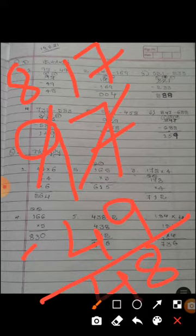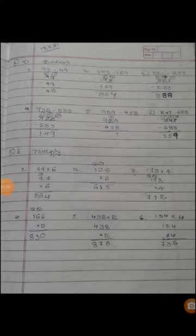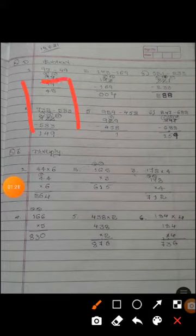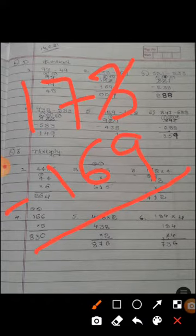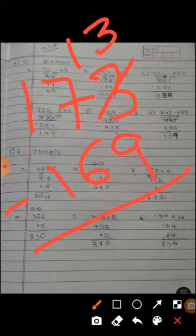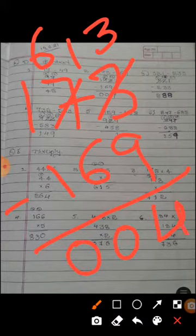Now second one, 173 minus 169. Now 3 will not go for 9 it become 13. 13 minus 9 it become 4. Now it has been taken borrow it become 6. 6 minus 6, 0. 1 minus 1, 0. The answer is 4.